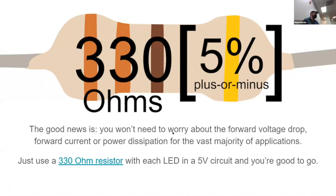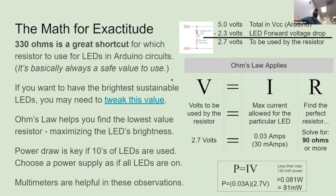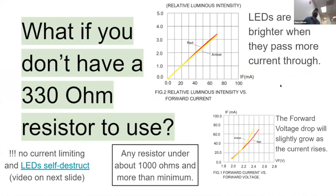A thousand of these resistors wasn't $10 — that gives you a sense for the price. If you use a 330 ohm resistor with an LED and a five-volt circuit, that's all you need to do. You can do the math to calculate it out if you want, but it's not the point. If you don't have a 330 ohm, you can use anything that's a thousand ohms or less if you're digging through a junk drawer — basically anything that will limit current works.